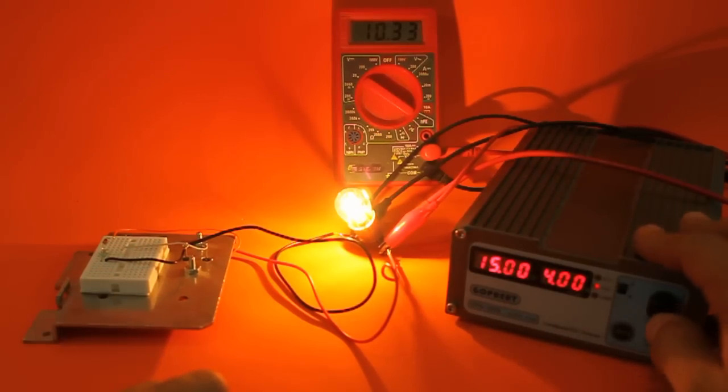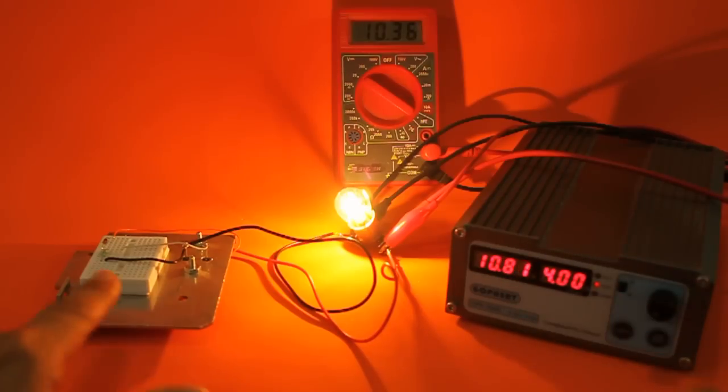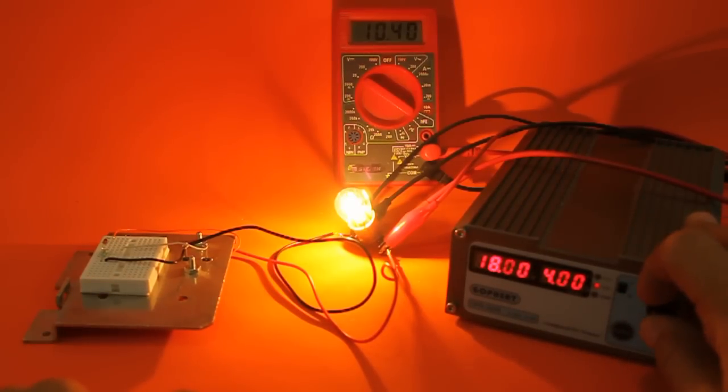The excess voltage is being consumed by our circuit. We can go to 18, for example, but the voltage does not increase.